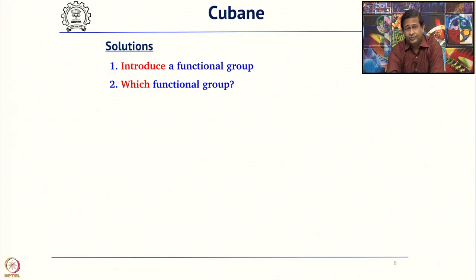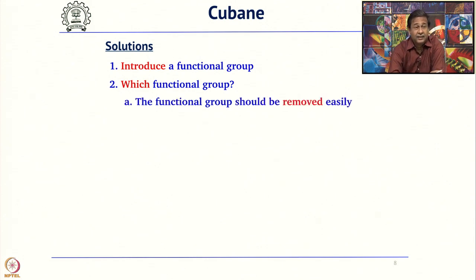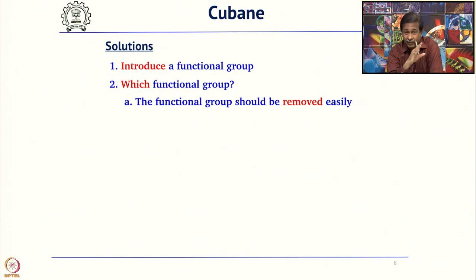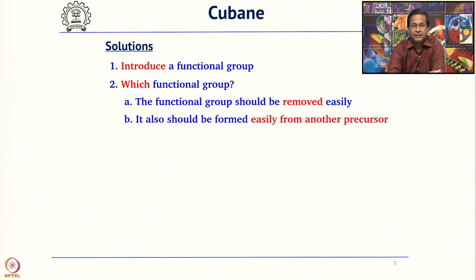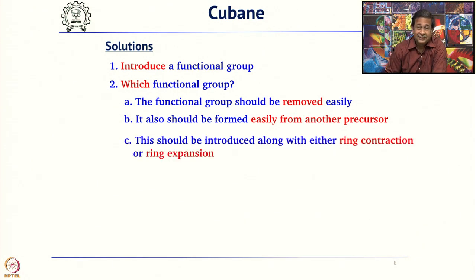You can introduce a functional group, but at the same time you should also know that when you go forward, that functional group should also be removed easily. It should be easily introduced and easily removed. When choosing a functional group, it should be easily made — from a simple reaction and an easy precursor.